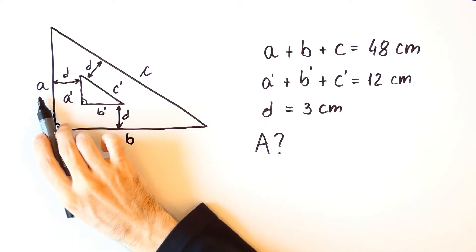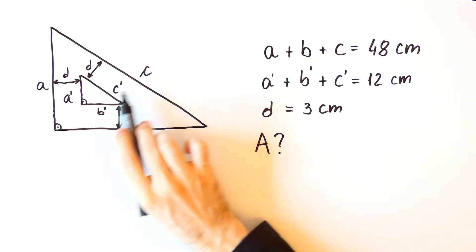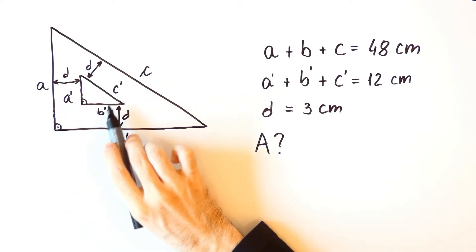Sides of the larger triangle are A, B and C and sides of the smaller triangle are A', B' and C'.